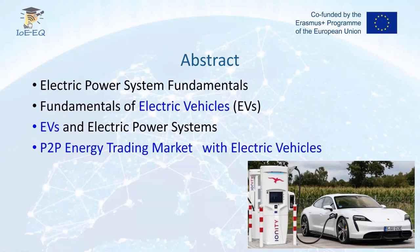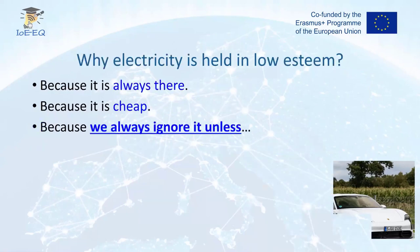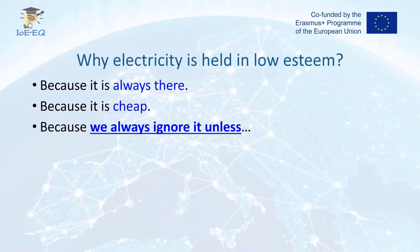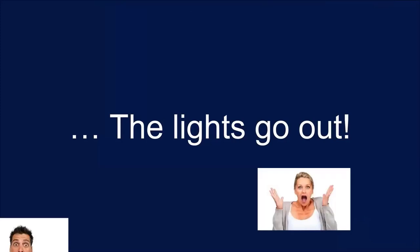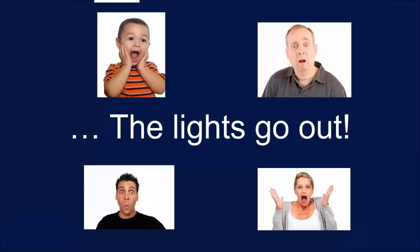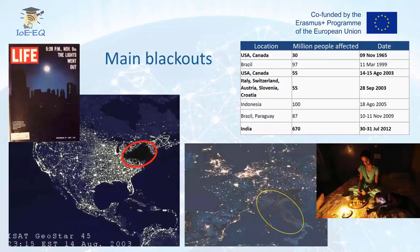The first point is asking a question: why is electricity held in low esteem? I think it's because it's always there, it's cheap, and usually nobody worries about it until the light goes out. Electrical power systems are the backbone of modern life, and if there is any problem in this system, it will affect millions of people. I present some data from different blackouts in the world. The biggest one was in India in July 2012, affecting 670 million people for almost a week. So it's important to notice the impact of electric power systems on our lives.